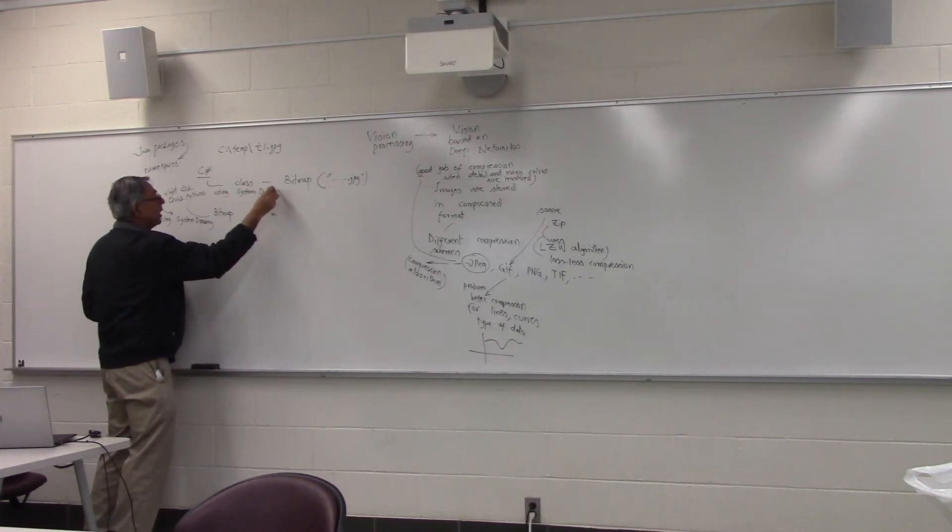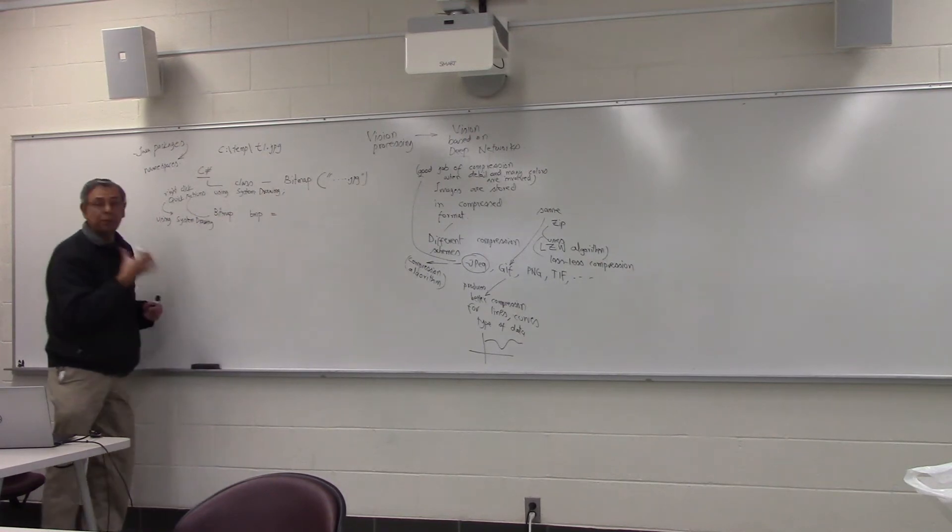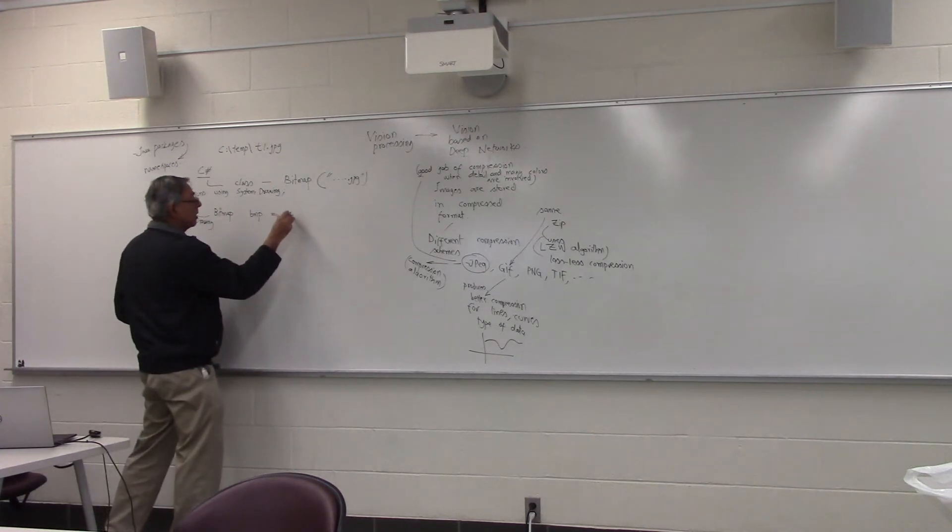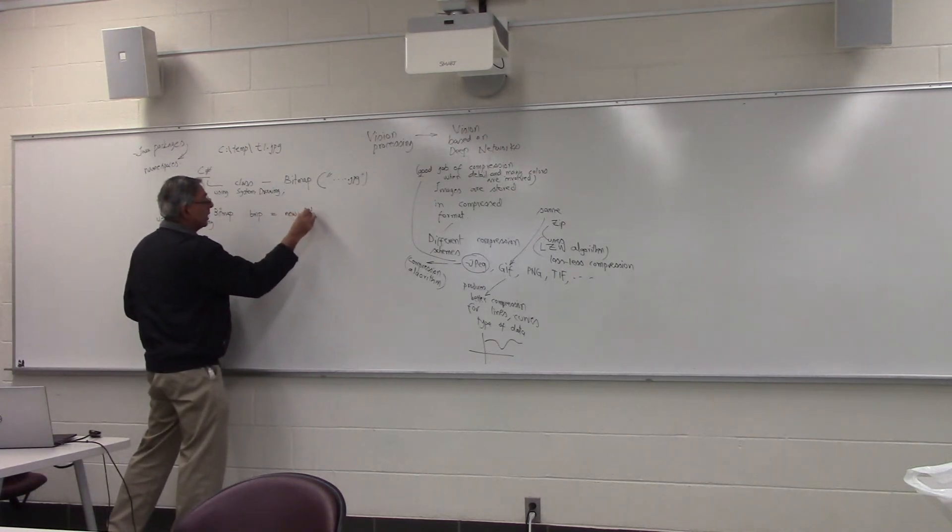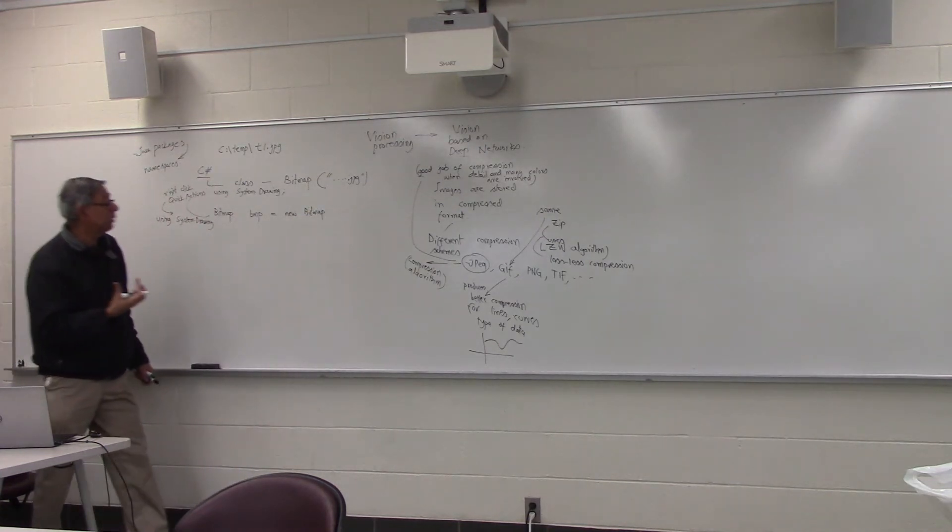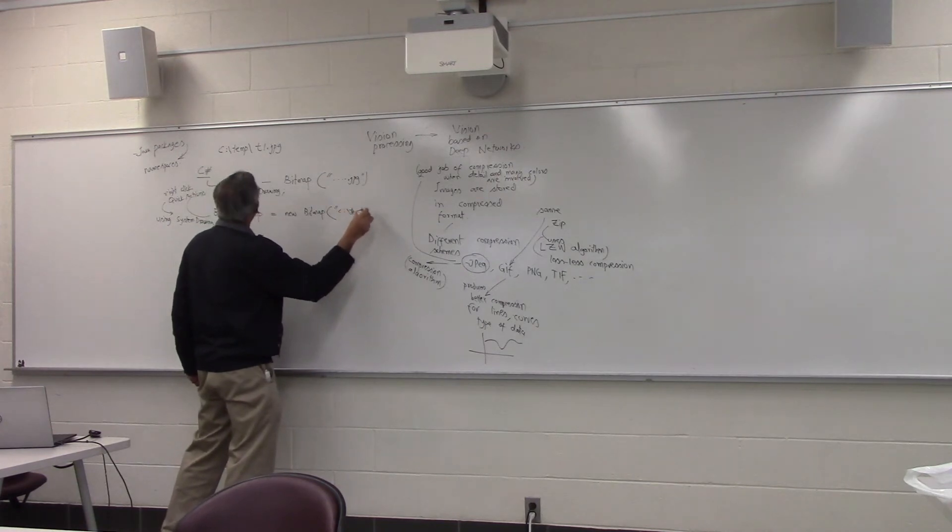You don't have to memorize anything. As long as you know the name of the class is Bitmap with capital B, right click and quick actions, pick the choice. Once it gives you, then create an object of it. In C sharp, you create an object of a class exactly like Java using the new keyword. And in the constructor, now you give it the file name, c:\temp\t1.jpg.